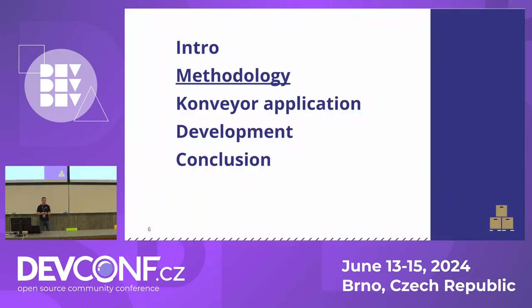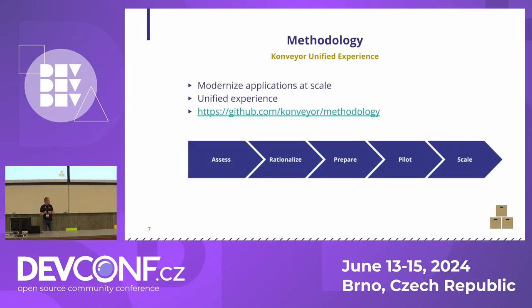Konveyor provides something called a Unified Experience — a defined process that recommends how an organization should do migration effectively. The first step is Assess: check existing applications, gather information about them, and determine the target state of the migration. This identifies gaps and estimates the work needed. Then the Rationalize step helps make decisions about whether the identified effort still makes sense for the organization, or whether they should just keep, retire, or retain the application.